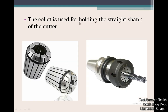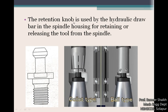The collet is used for holding the straight shank of the cutter. Small slots are partially drilled or slotted so that the tool shank goes inside. When you tighten the collet nut around it, the collet gets compressed and holds the cutting tool securely inside the assembly. The retention knob is used by the hydraulic drawbar in the spindle housing for retaining or releasing the tool from the spindle.